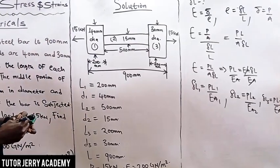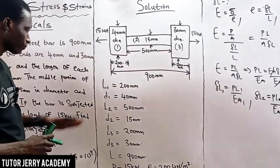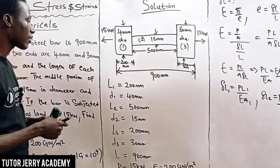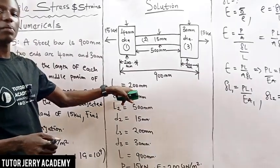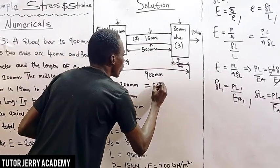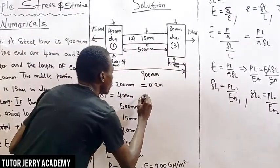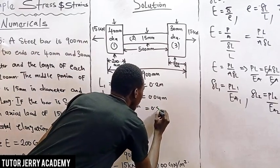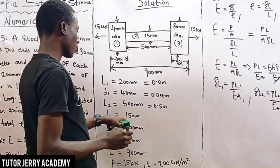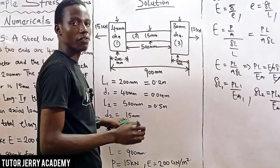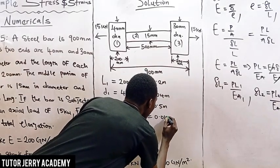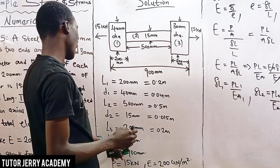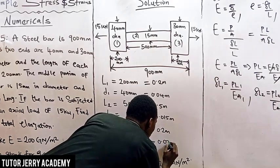Now we convert all units from millimeters to meters by dividing by 1000. So: L1 = 200 mm → 0.2 m; D1 = 40 mm → 0.04 m; L2 = 500 mm → 0.5 m; D2 = 15 mm → 0.015 m; L3 = 200 mm → 0.2 m; D3 = 30 mm → 0.03 m.